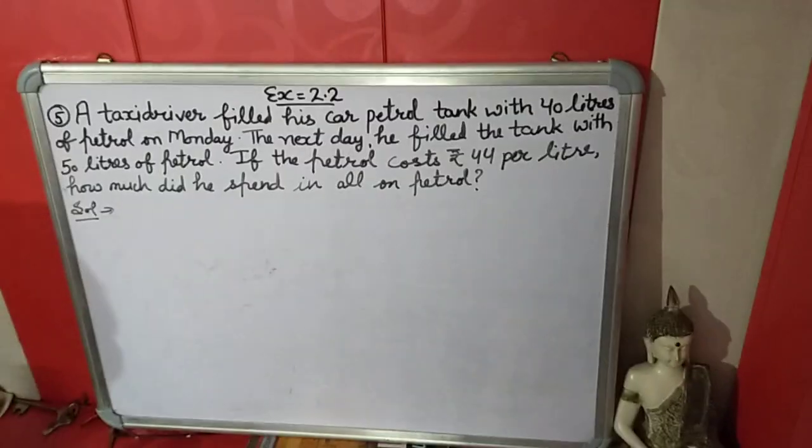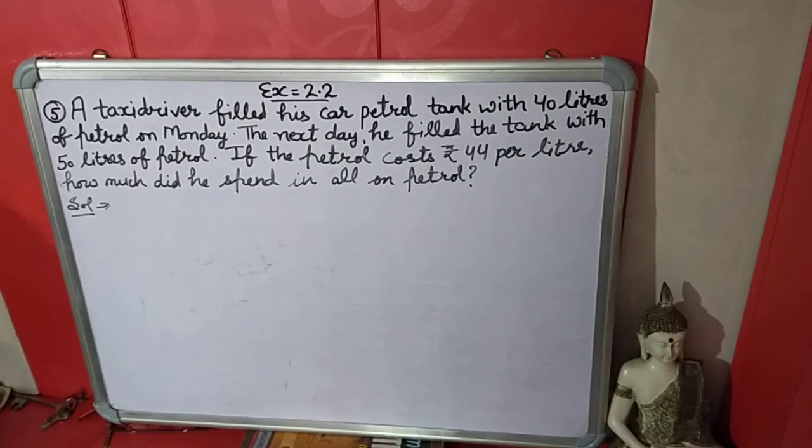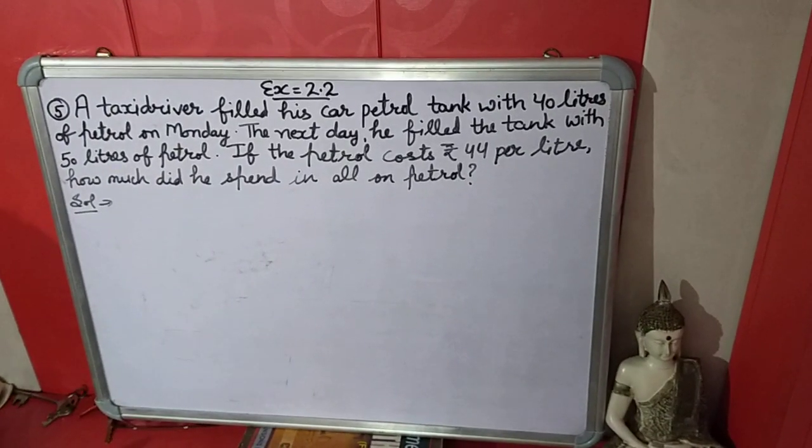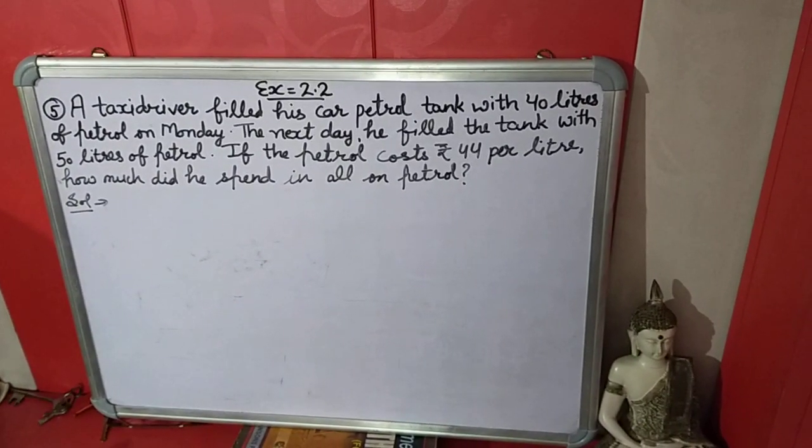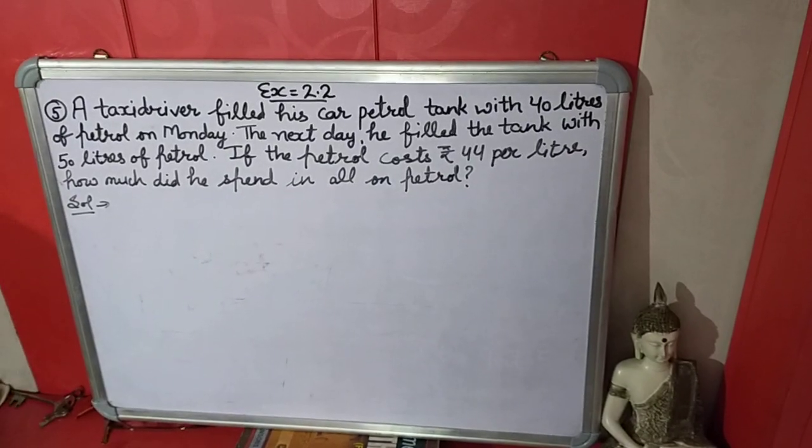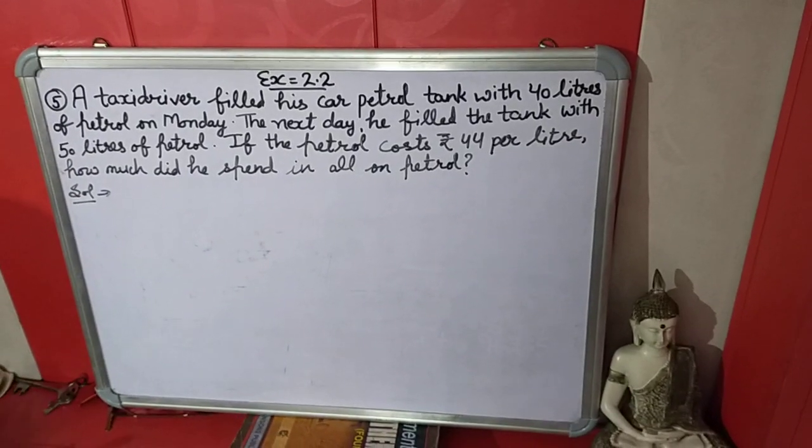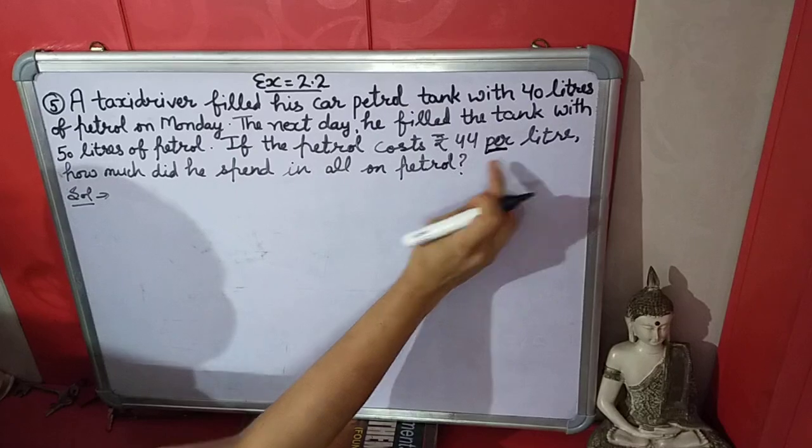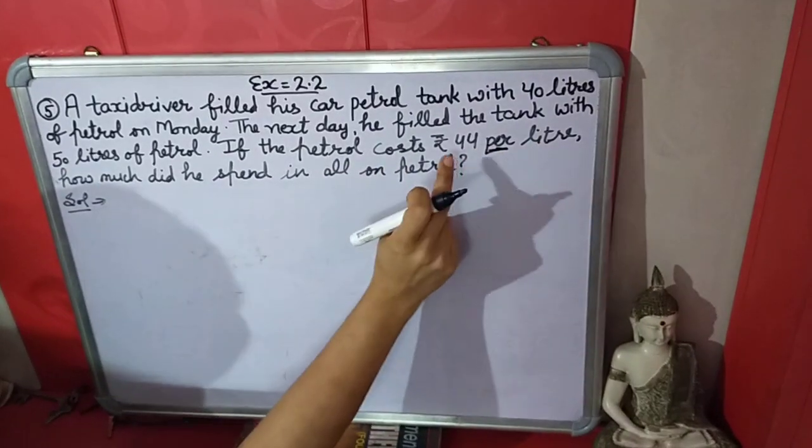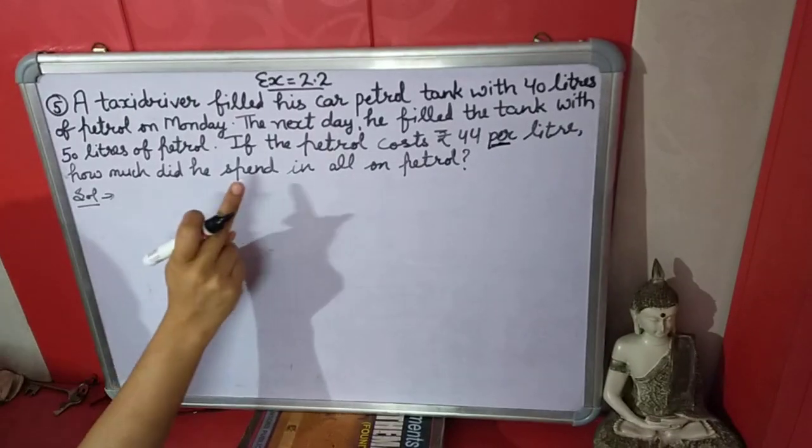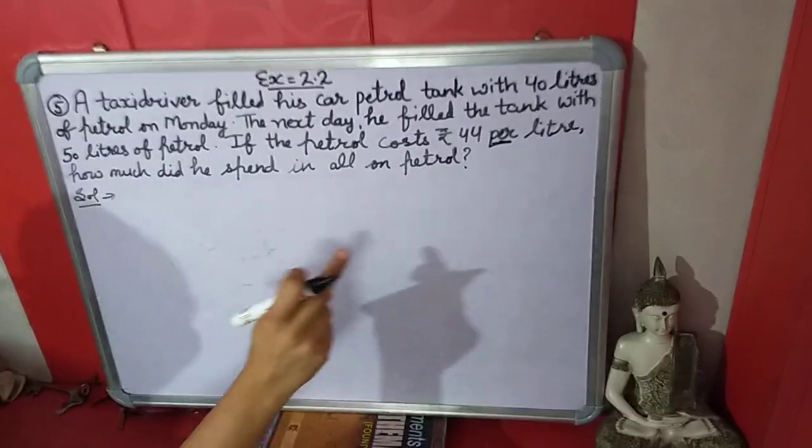Now look at the fifth question. A taxi driver filled his car petrol tank with 40 liters of petrol on Monday. The next day he filled the tank with 50 liters of petrol. If the petrol costs rupees 44 per liter, per means one, the cost of one liter petrol is 44 rupees. So how much did he spend in all on petrol?